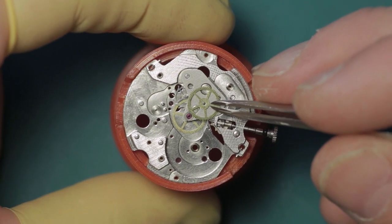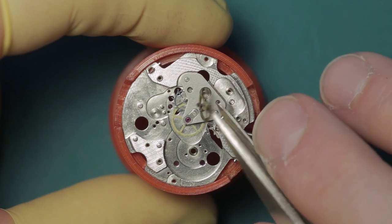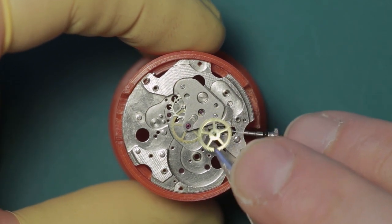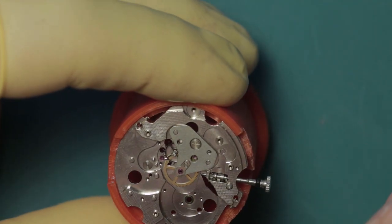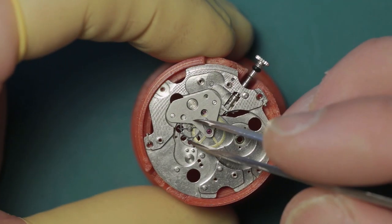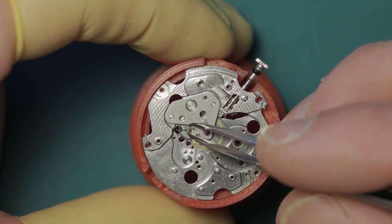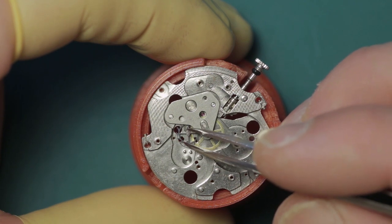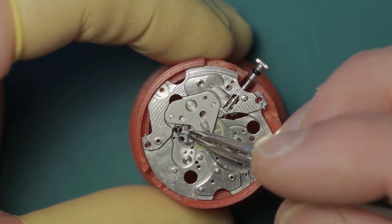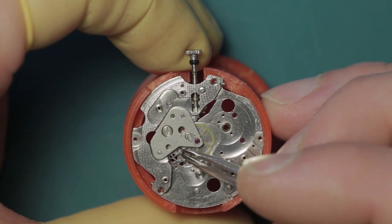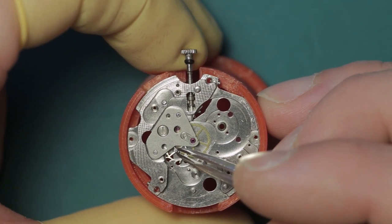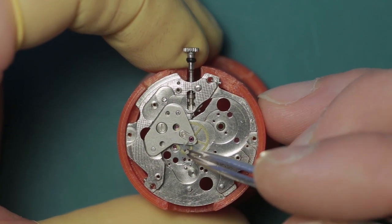We can now remove the third wheel and the escape wheel. If I can wiggle that free, I'm trying to do that so you can see on the camera. There we go.